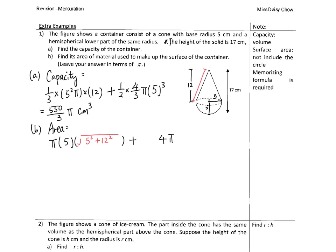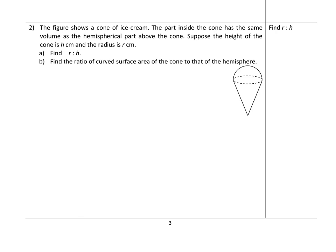Then I add the hemisphere surface area, which is 4πr² divided by 2. The curved surface area of the cone gives 65π, and the hemisphere gives 50π. So the final answer is 115π cm².